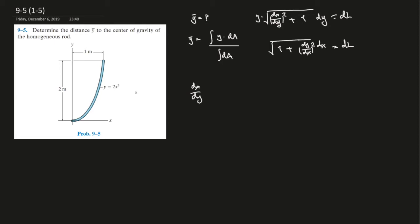You have to write x in terms of y. So y equals 2x cubed, so x equals y divided by 2 to the power of 1 over 3. You have to take the derivative of this crazy thing and plug that into this equation.